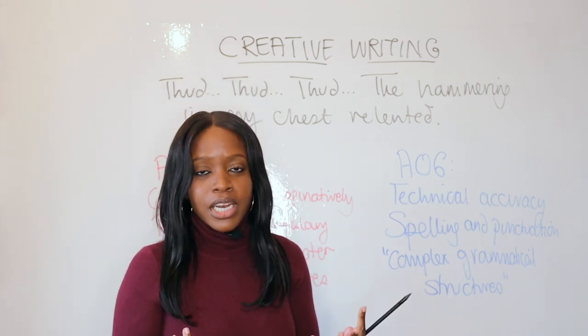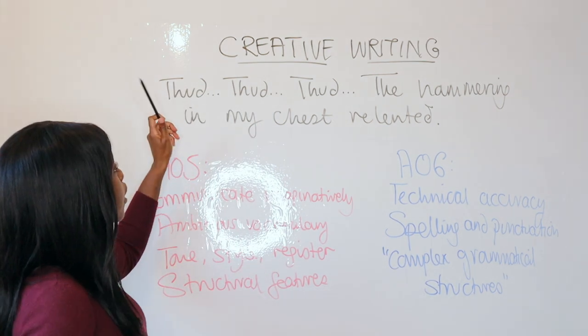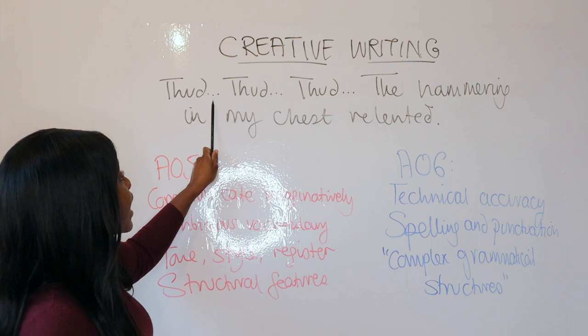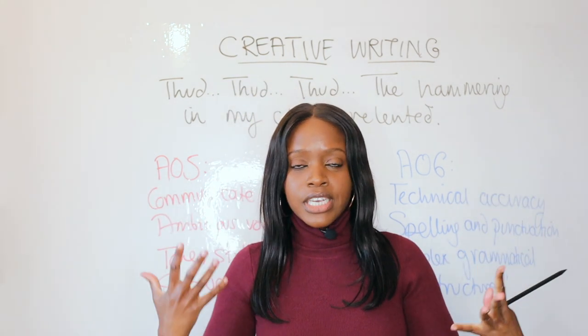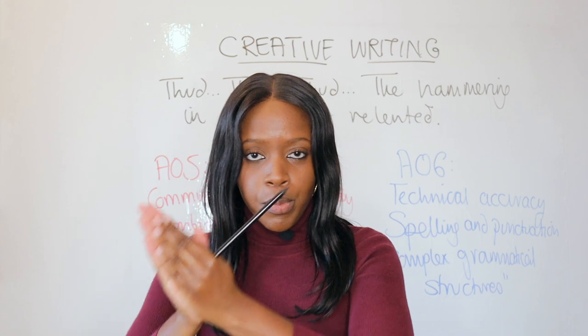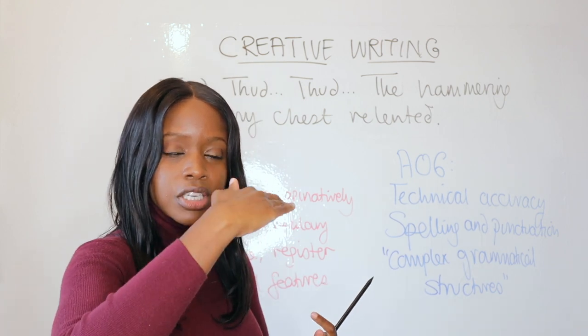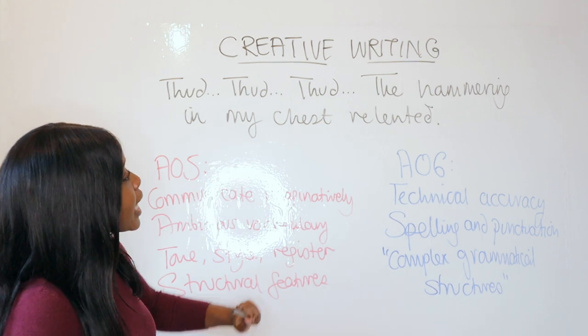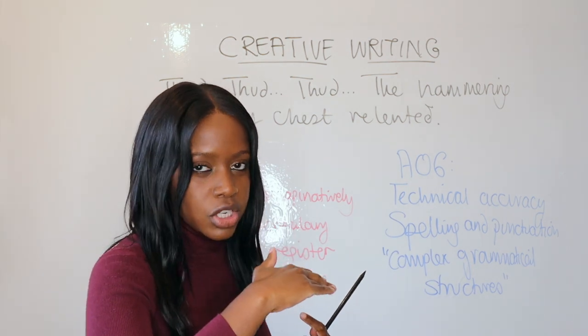By the way, "relented" means slowed down — ambitious vocabulary. I use repetition: "Thud, thud, thud," but also ellipsis, showing that I was feeling really scared, really tense. Maybe I was fleeing something, or someone opening a door with a creaking sound. Your resolution paragraph follows on from your problem paragraph where you're facing some kind of tension, so your heart is racing. Here I'm showing that my racing heart is starting to slowly go down using repetition, ellipsis, and hyperbole — to show that this hammering, thudding heart is now starting to decrease as the tension goes down.